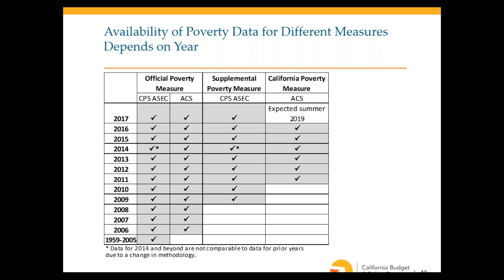The official and supplemental data are released every fall for the prior year's data — for example, 2017 data was released in September 2018. The California poverty measure data is typically released about six to nine months later, so the 2017 CPM data won't be available until summer 2019. This timing difference can be an important consideration when choosing which measure to use.